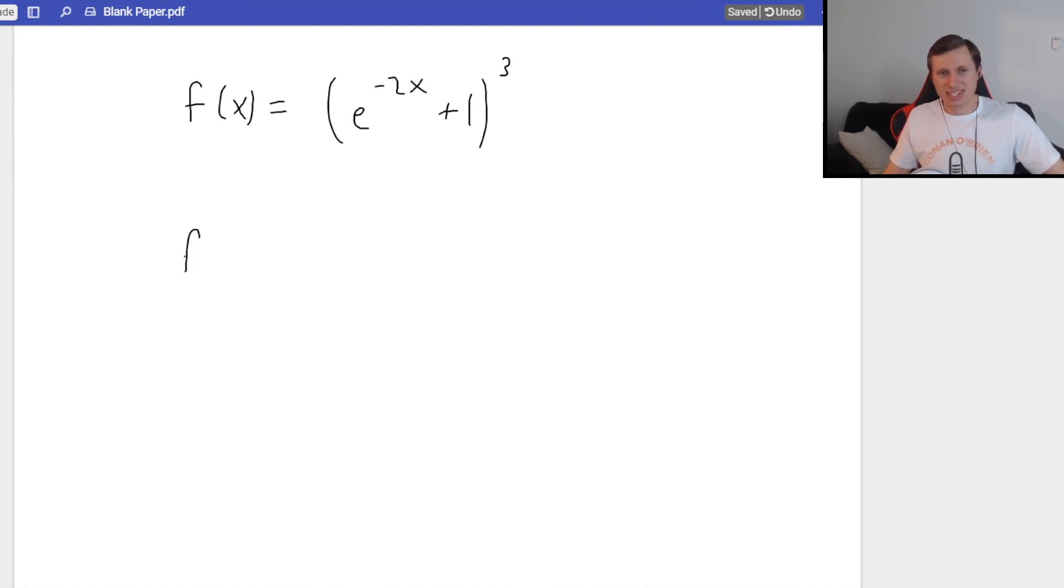How do we do the chain rule? So, the derivative is going to be f prime of x equals, remember with the chain rule, I work from the outside in. What's the outer function going on here? It's this cubed on the outside. I deal with that first. It's a power rule, so I pull the 3 out in front times the original function, e to the negative 2x plus 1. Now it's raised to the 3 minus 1 power, so 2. And after I do this, we're not done yet.